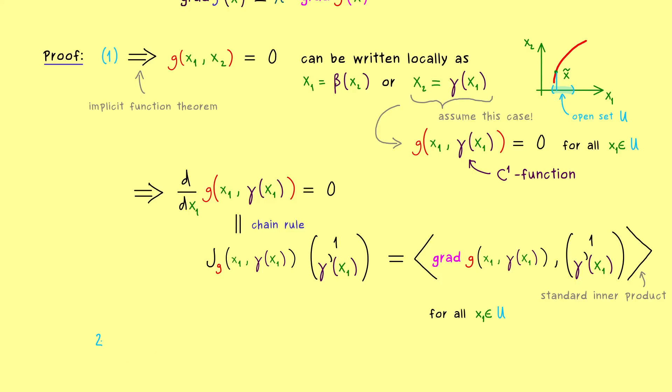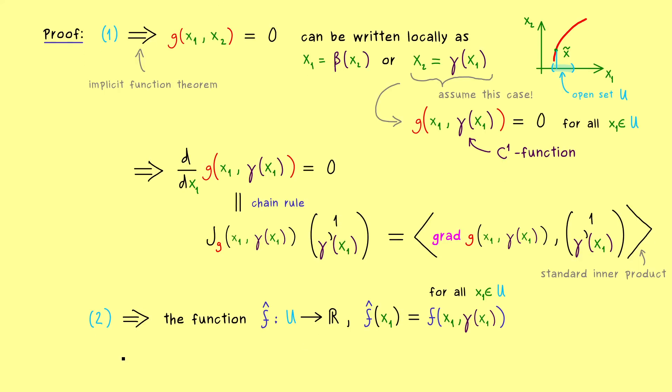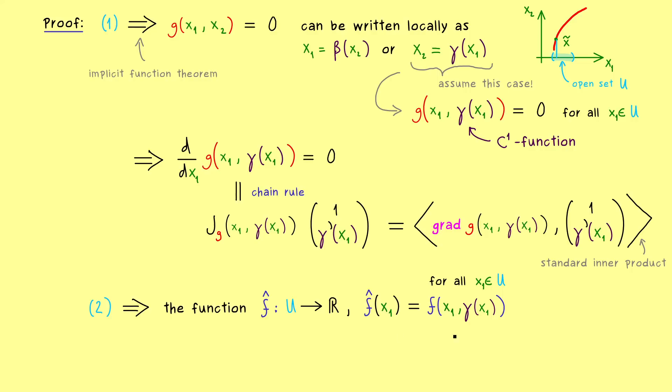Then let's continue the proof with our second condition. This now implies we can consider a new function f hat, which is just defined on set U and is the restriction of f to the contour line of g. This means f hat of x₁ is given by function f with two inputs: first one is x₁ and second is our γ(x₁). So it's also a composition and therefore a C¹ function as well. However, now condition 2 tells us that this function has a local extremum at x tilde, or more precisely at x₁ tilde, where x₁ tilde is the first component of x tilde.